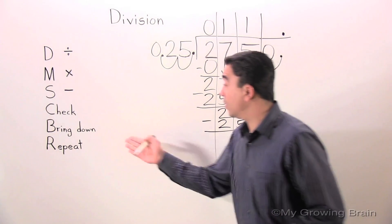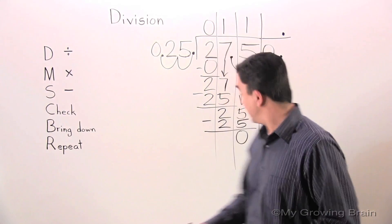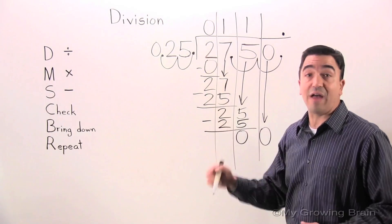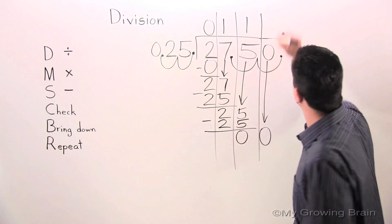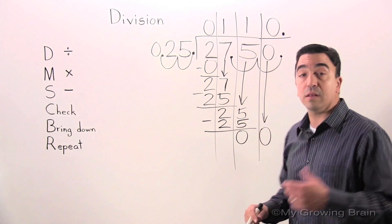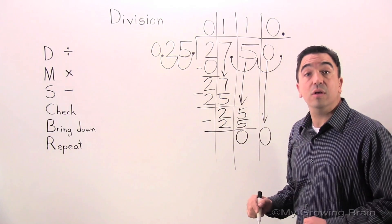Next step. Repeat. Repeat the whole process. Back to the top. Divide. 0 divided by 25, or 25 into 0. 0. Next step. Multiply. 25 times 0 equals 0.